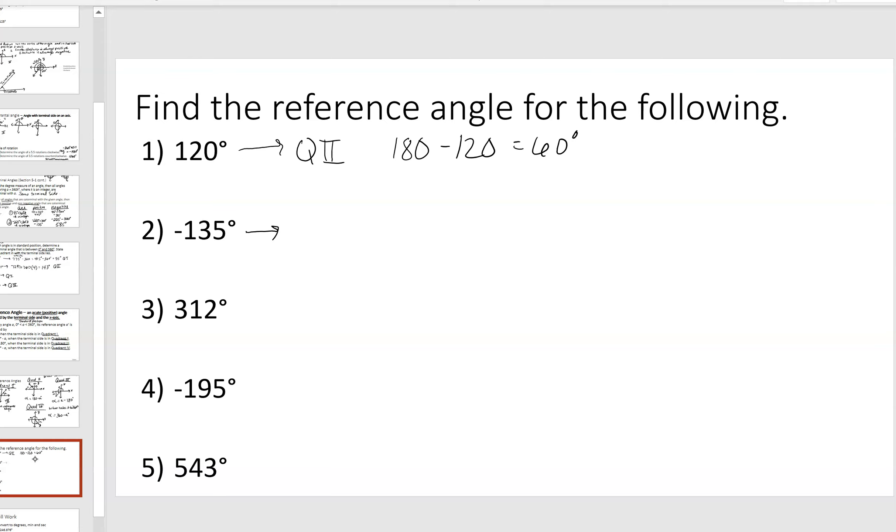Now, this one's a negative angle. This is negative 135. Sometimes it might be helpful to draw them out. So, remember, this is negative 90. This is negative 180. So, negative 135 lands somewhere here. So, that's a third quadrant angle. Now, you could leave it in its negative form and try to work with it from there. And, it's in quadrant three. So, I've got to think about what's going to take it to 180. Well, 135 to 180, that would be a negative 45 degrees. But, the reference angle is not negative. So, cross out the negative. Your reference angle would be 45 degrees.